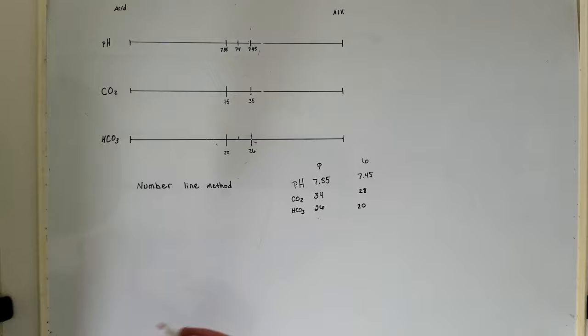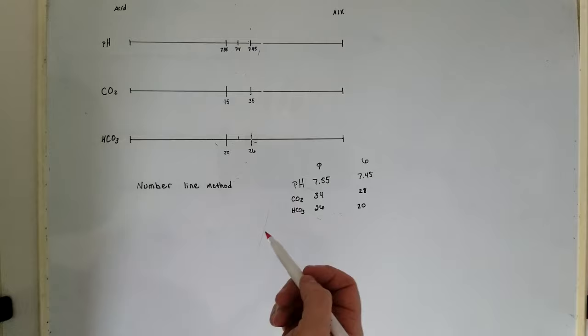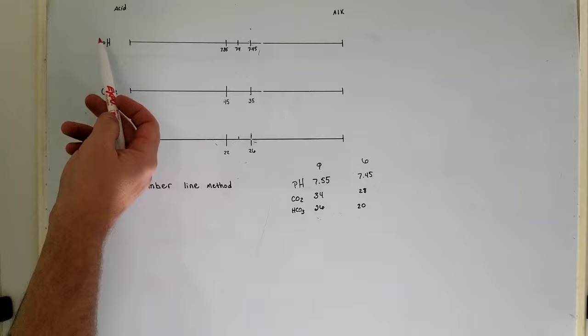I was having trouble visualizing these ABG practice problems using the Rome method or the tic-tac-toe method, so this is just a little thing that I came up with that has helped me out. Basically, you draw three number lines: pH, CO2, and bicarb, with the acid side on the left and alkali side on the right.